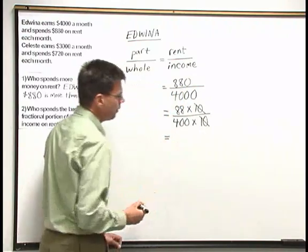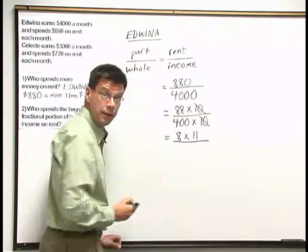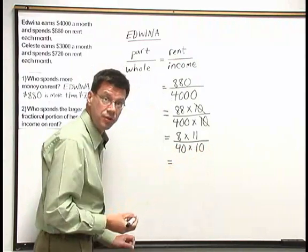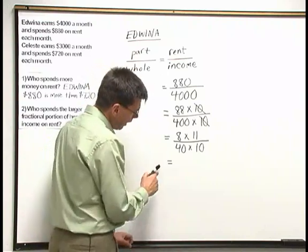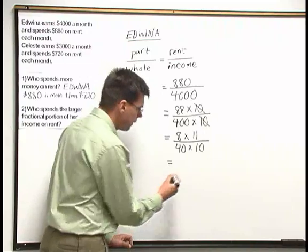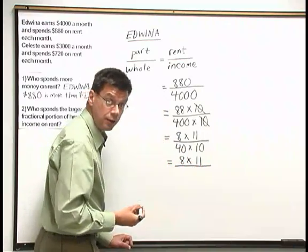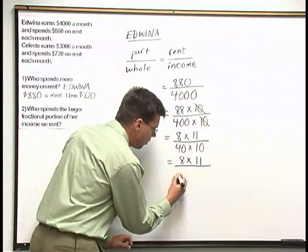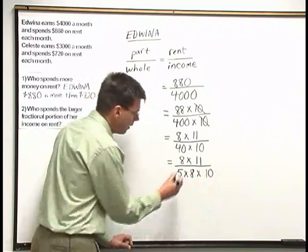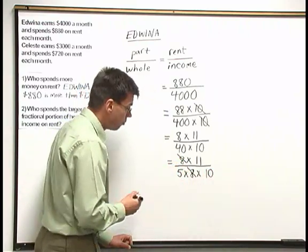Now let's continue to reduce further. 88 can be broken down as 8 times 11. 400 can be broken down as 40 times 10. I notice that 8 goes into 40, so I can write that 40 as 5 times 8. I'll leave 8 times 11 in the numerator, and below I'll break the 40 into 5 times 8, leaving the times 10 for now. I can now cancel the 8 above and below.